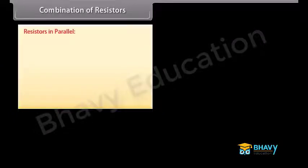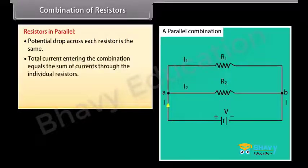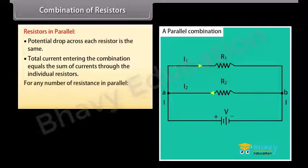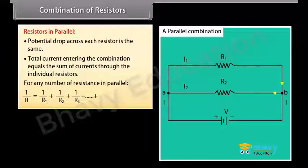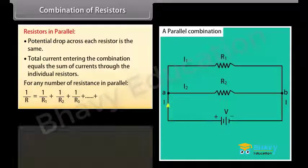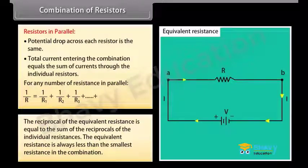Resistors in parallel: the potential drop across each resistor is the same. The total current entering the combination equals the sum of currents through the individual resistors. For any number of resistances in parallel, 1/R equals 1/R1 plus 1/R2 plus 1/R3 and so on. The equivalent resistance is always less than the smallest resistance in the combination.